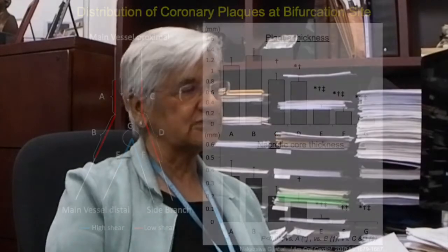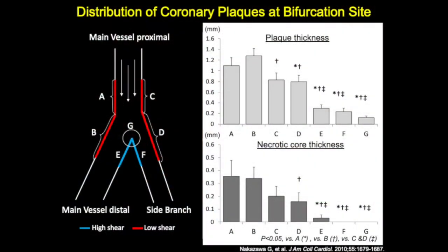I'd like to start with where does atherosclerosis form in bifurcation sites. As shown here, the sites marked with the red line A, B, C, and D are the regions where atherosclerotic plaques form. On the other hand, the region of the carina is spared from any lesion formation.